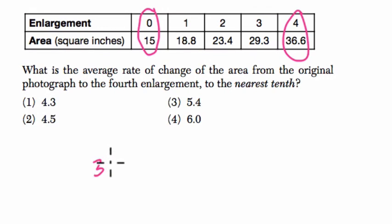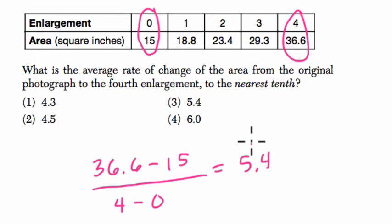So I'm going to do the change in the area, or the y values, 36.6 minus 15 over 4 minus 0. And if you work this out, we get the answer 5.4.